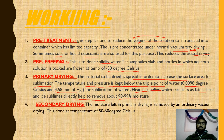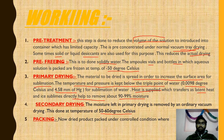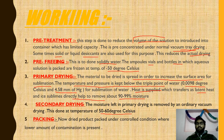The next step is secondary drying. The moisture left after primary drying is removed by ordinary vacuum drying. Since 90–99% moisture was removed in primary drying, secondary drying removes the remaining moisture. Temperatures of 50–60°C are used, and secondary drying takes a minimum of 10 to 20 hours.